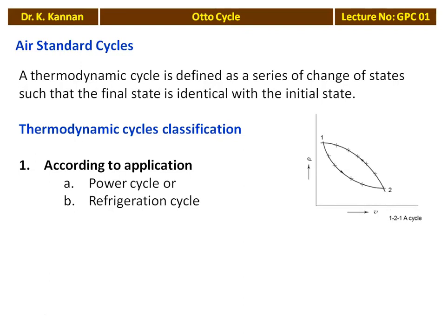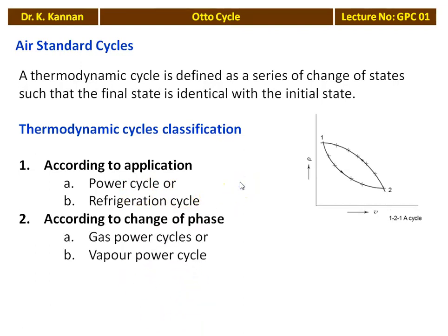The refrigeration cycle absorbs heat energy and produces low temperature — the refrigerator works on the refrigeration cycle. According to the change of phase, cycles may be gas power cycles or vapour power cycles. In a gas power cycle, the working substance remains gas throughout — for example, the Otto cycle, diesel cycle, and Brayton cycle. In a vapour power cycle, the working substance undergoes a change of phase — vapour phase, liquid phase, or a combination. For example, the Rankine cycle, on which the steam power plant operates, is a vapour power cycle.